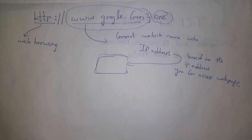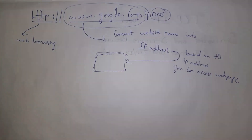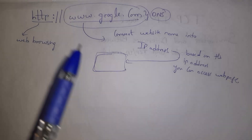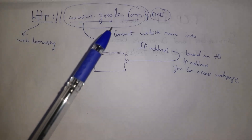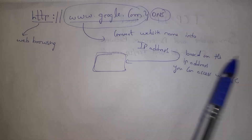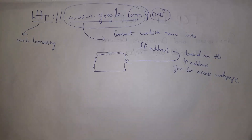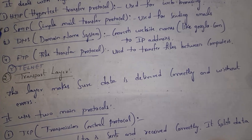Next is DNS — DNS stands for Domain Name System. For example, when I open a website like google.com and click Enter in a web browser, the DNS converts our website name into an IP address. Based on this IP address, we get that website. So the main duty of DNS is to convert our website name into an IP address.